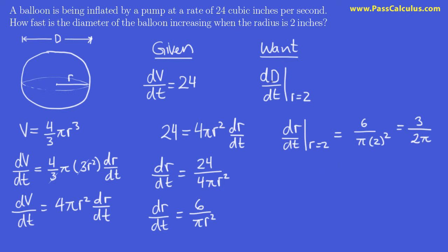Now that's not really what we want though. This is the change in radius with respect to time when r is 2. We really want the change in diameter at that instant. It's easy though because we know that the diameter is 2 times the radius.